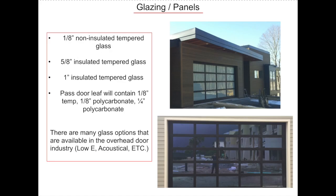Eighth-inch clear tempered glass is the standard in most cases. This glazing is good for service stations, neutral temp zones, and clients who may not be interested in an energy efficient or insulated door. Five-eighths and one-inch insulated glass units are also available. All glazing units will have a U-value associated with them that determines how energy efficient they are. For example, a clear five-eighths insulated unit has a U-value of 0.5 and a solar heat gain coefficient of 0.76.